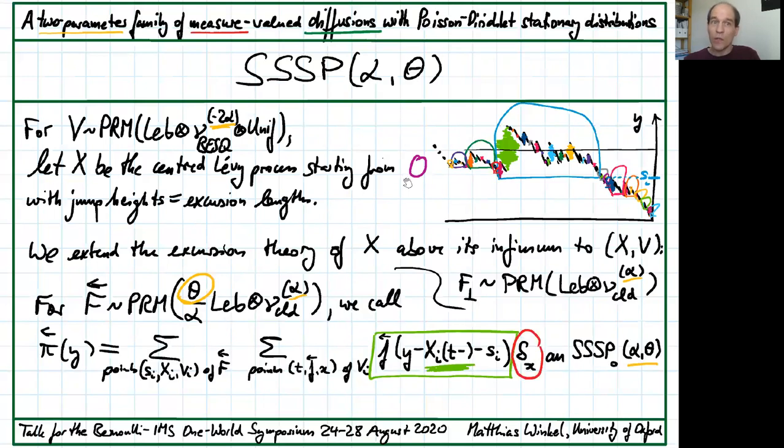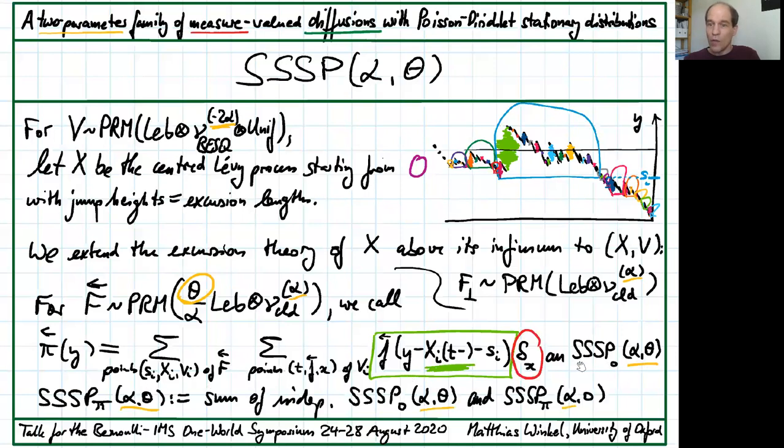This construction again with spindles evaluated where they cross level Y yields a self-similar superprocess with parameters alpha and theta. We're starting from the zero measure. There are no spindles that contribute to level 0 but we can start from any initial measure pi by adding the SSSP 0 alpha theta starting from zero to an SSSP pi alpha zero starting from pi.